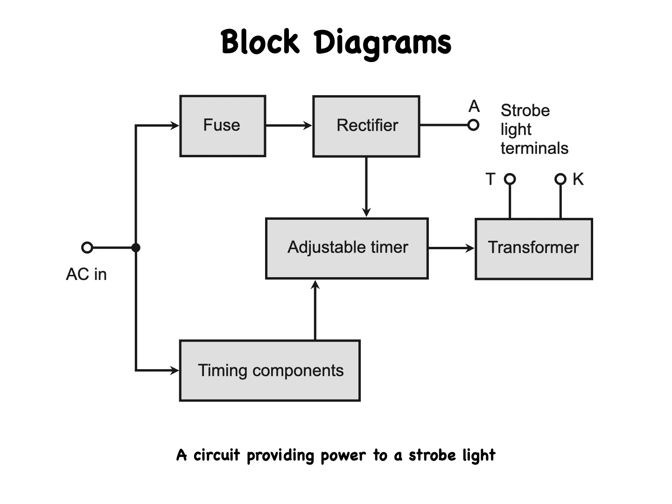The input AC goes to a fuse, and also to a combination of components that provide timing. The top path, where the fuse is located, leads to a diode type rectifier, and the rectifier output passes directly to one terminal of the three-terminal strobe lamp.